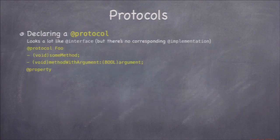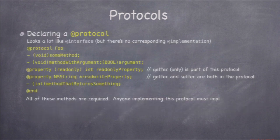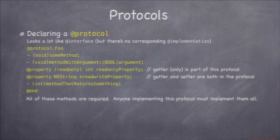Declaring a protocol looks almost exactly the same as an @interface statement. With @interface you put all your public methods and properties, or you can have a private @interface at the top of your implementation. For a protocol, you say @protocol instead of @interface. A protocol is just a declaration of the methods — there's no implementation, so there's no @implementation for an @protocol.